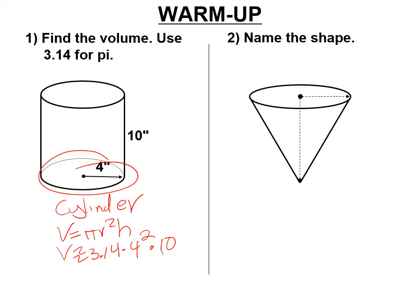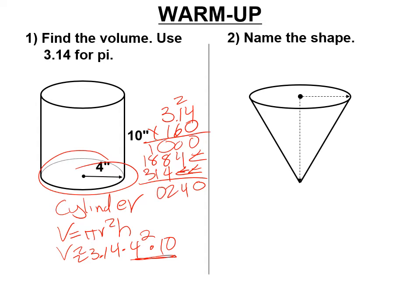4 squared is 16, and 16 times 10 is 160, so this is going to be 3.14 times 160 because I can multiply in any order because of the commutative property. So you get a row of zeros, and then 6 times 4 is 24, and then 6 plus 2 is 8, and 6 times 3 is 18, and you step over twice, and you multiply 4, 1, and 3, and you add up all these rows. And you move the decimal twice, and the volume is approximately 502.4 cubic inches.